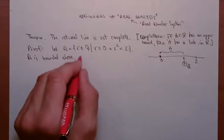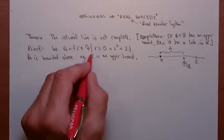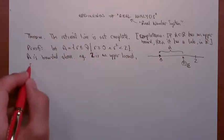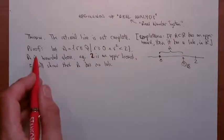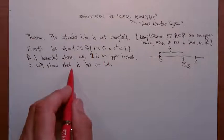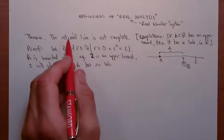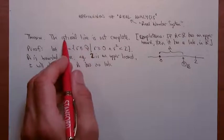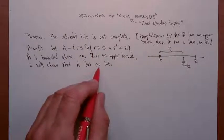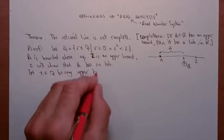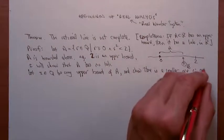A is bounded above — for example, 2 is an upper bound. We only need to find one, and 2 will do just fine. I will show that A has no least upper bound. That would mean A is a set of rationals which has an upper bound but no least upper bound, and hence the rational line is not complete. Because completeness would say any set of rationals with an upper bound in the rationals has a least upper bound in the rationals.